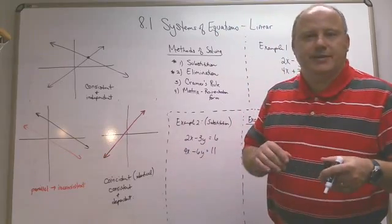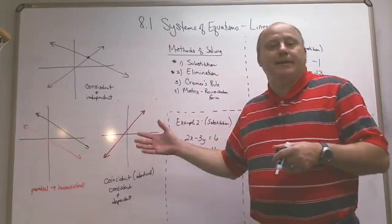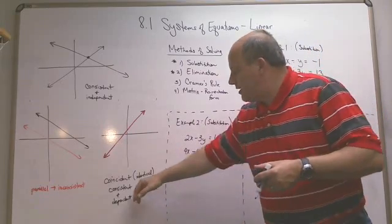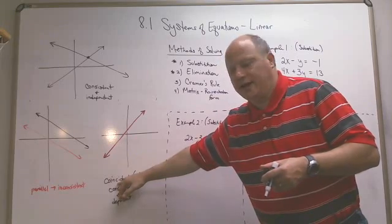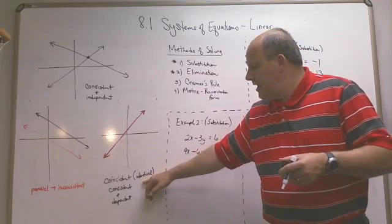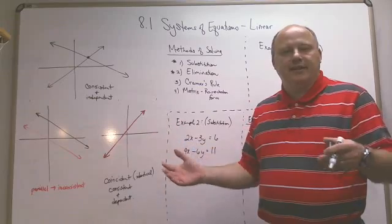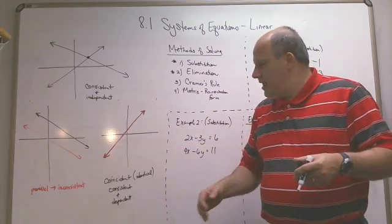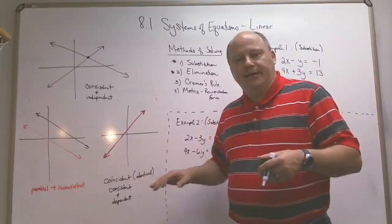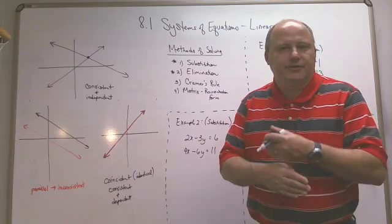There is another situation where the two lines happen to be the same line. When you graph them, they actually lay on top of each other — that's when they're called coincident, also known as identical. They're consistent because they share all solutions, and they're dependent because one depends on the other.